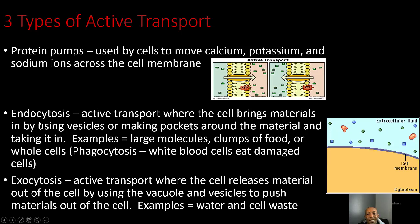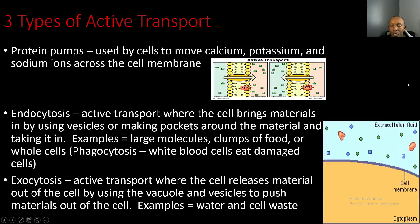The second type is endocytosis — active transport where the cell brings materials in by using vesicles or making pockets around the material and taking it in. Examples include large molecules, clumps of food, or whole cells. Phagocytosis is a special type of endocytosis where white blood cells eat damaged cells. The third type, exocytosis, is where the cell releases material out by using vacuoles and vesicles to push materials out — examples include water and cell waste.